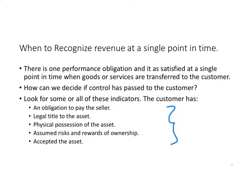Does the customer have an obligation to pay the seller, which would typically exist if goods or services have been delivered? Does the customer have legal title? If the customer doesn't have legal title — for example, in a long-term rental, what we call a lease — do they have physical possession of the asset? Have they assumed the risks and rewards of ownership? Have they accepted the asset? These are all indicators. We don't have to meet all of them, but we look for at least some of them.